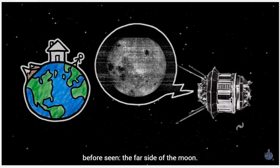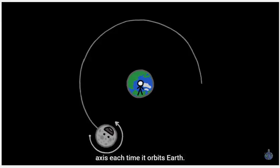We always see the same old side of the Moon because the Moon rotates exactly once on its axis each time it orbits Earth.